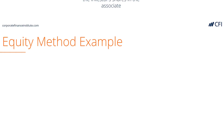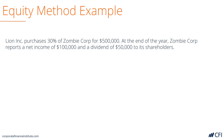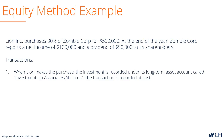Let's see how this actually works with an example. Imagine that Lion purchases 30% of Zombie Corp for $500,000. At the end of the year, Zombie reports net income of $100,000, and half of that — $50,000 — is paid out as a dividend to its shareholders. Here are the transactions that would take place.